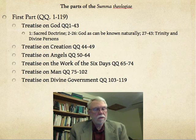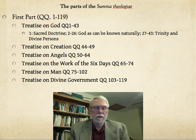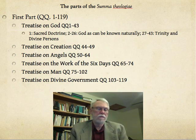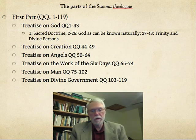Continuing, questions 44 to 49 consist of a treatise on the nature of creation. The treatise on angels, the highest of created entities, is in questions 50 to 64. The treatise on the work of the six days — that is the origination of the natural world that we see around us — is in questions 65 to 74. The treatise on human beings is questions 75 to 102. And then finally the treatise on divine government or providence.